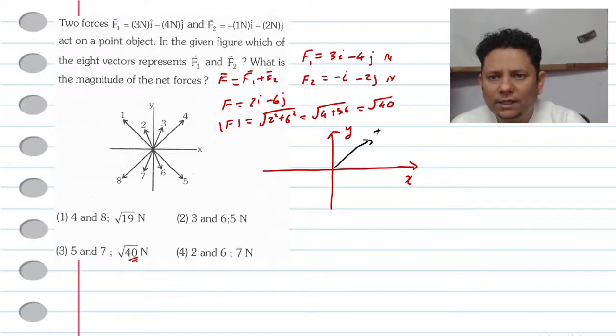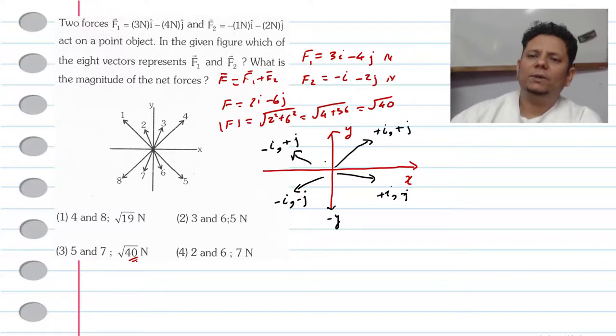Any of the vector which is in this direction, that i cap is in this direction or the j cap is in this direction, so that will be minus i cap and j cap will be plus.